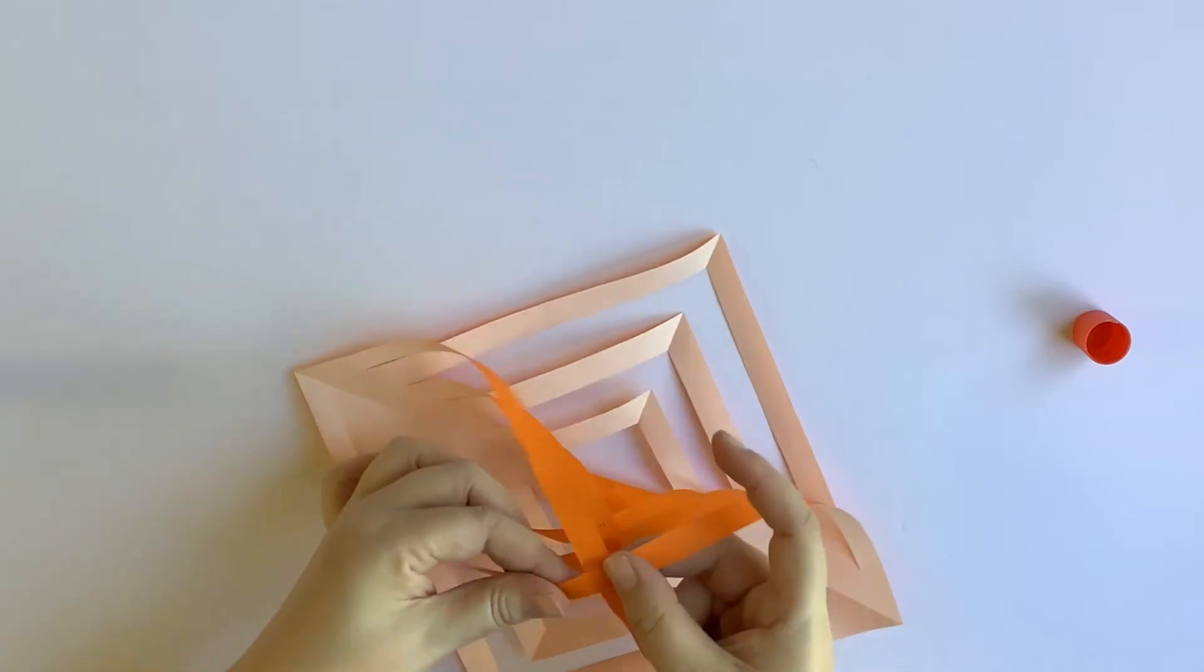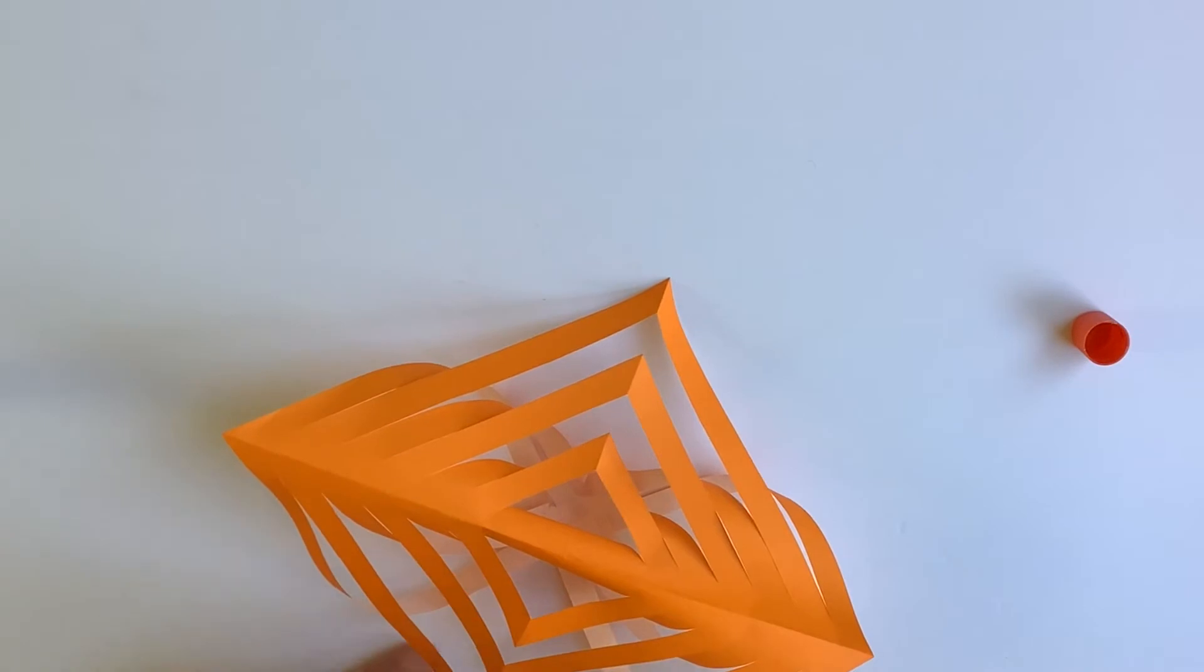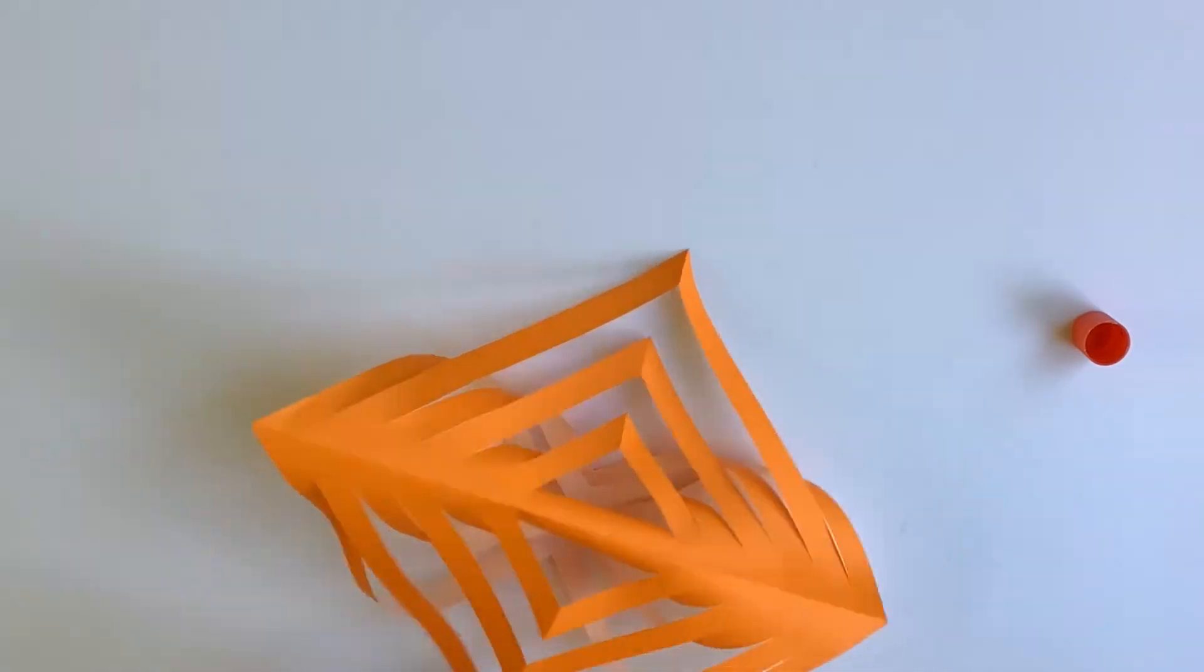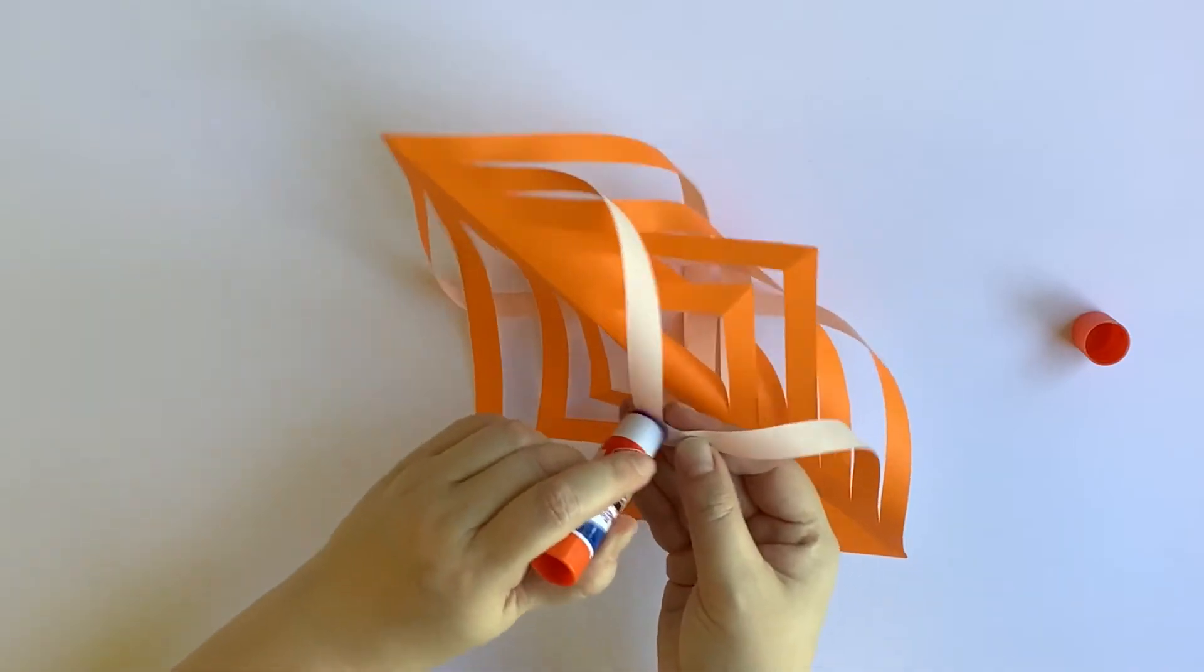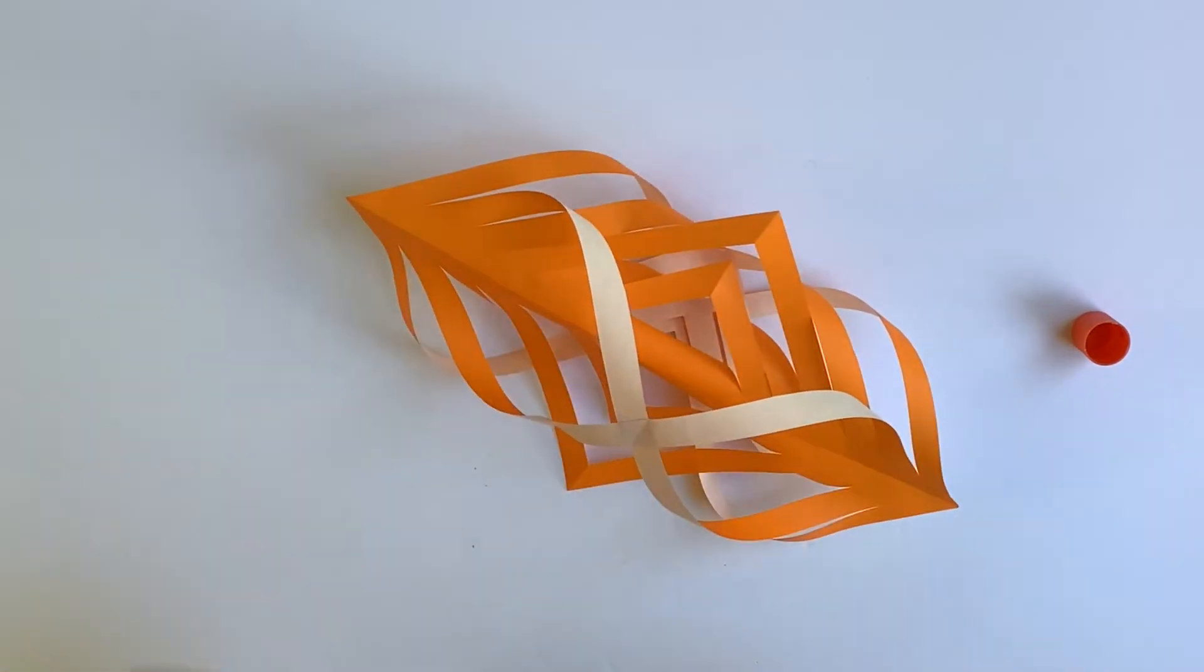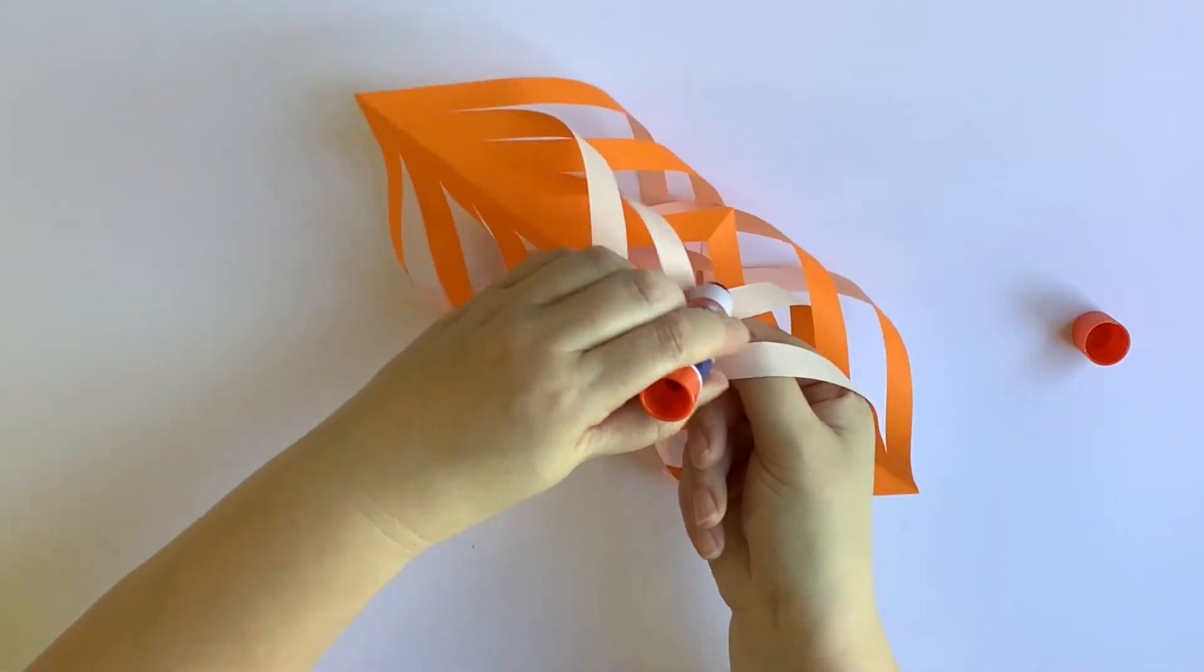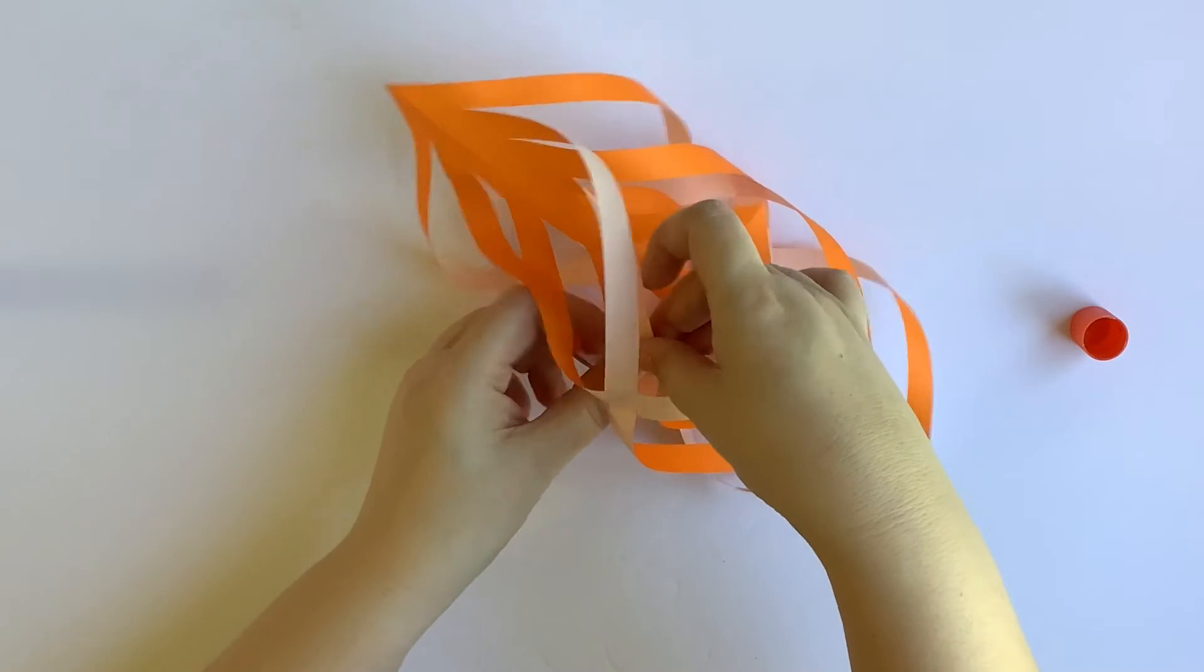Now that I've finished gluing the strips on one side I'm going to flip over my wind catcher and glue the strips on the opposite side repeating the same process bringing together the strips and gluing them so that they form a cylinder on this side.